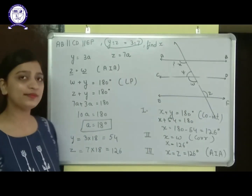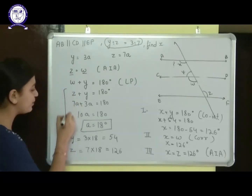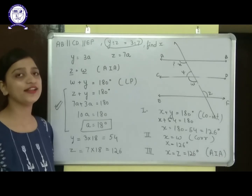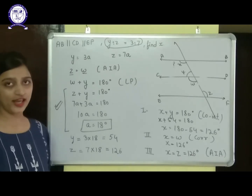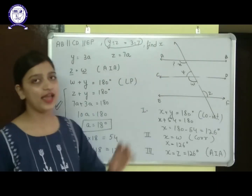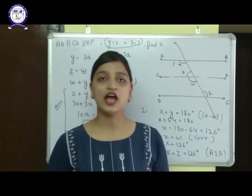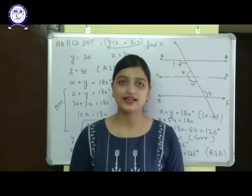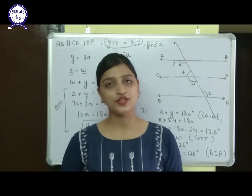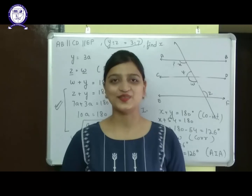One thing remains the same: you must first find the value of A, then Y and Z, to find X. These are the types of questions that can be asked on parallel lines and a transversal. I hope you understand today's topic. Keep practicing, and thank you.